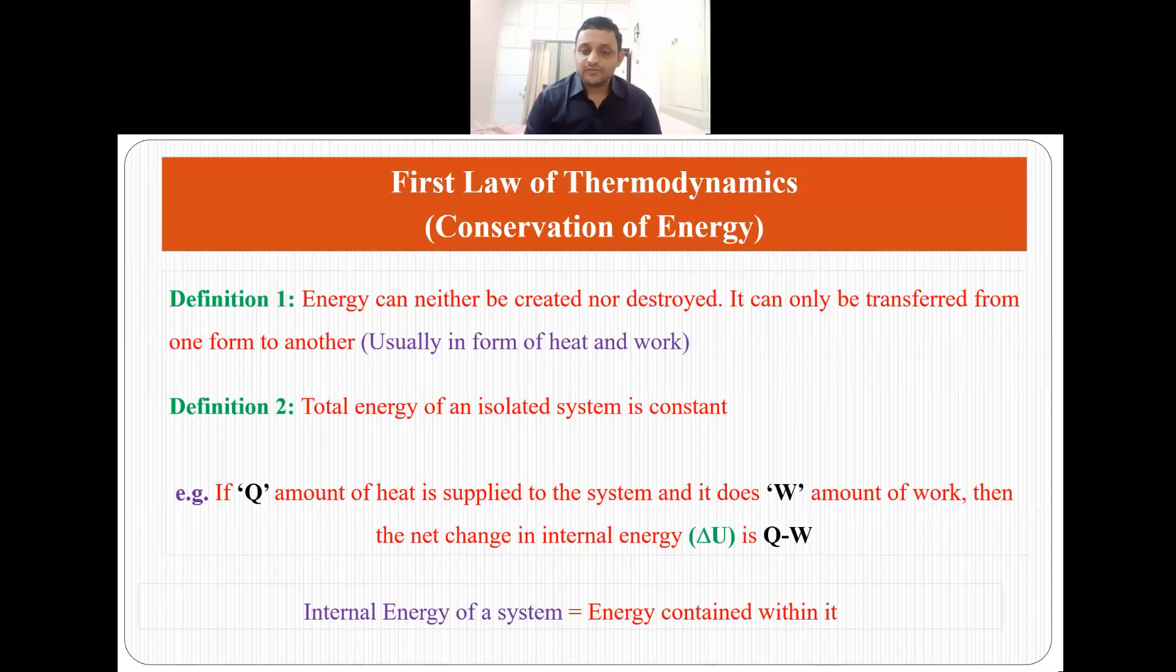For example, suppose you have a system and you are providing Q amount of heat to the system and it does W amount of work. Then the change or the total change in the internal energy which is nothing but the energy which the system contains is Q minus W and this delta U equals to Q minus W is our first law of thermodynamics.